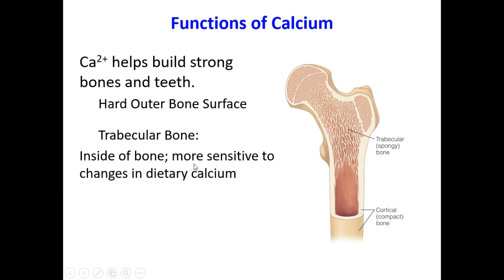If calcium is low, bone development is compromised. During hypocalcemic situations — when calcium levels are low — the body draws calcium from the trabecular bone or spongy bone. If this is chronic, the bones become porous and brittle — this is osteoporosis. The condition can also progress into osteomalacia. Calcium deficiency can develop over many years of low calcium intake.